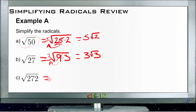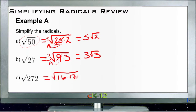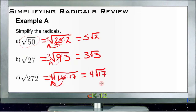And then finally, the square root of 272. 272 is 16 times 17, so we have the square root of 16 times 17. And 16 we know the root of, so we put a 4 outside. And that leaves us with 4 roots of 17.